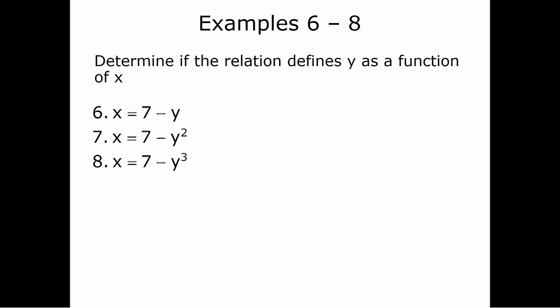For number six, x = 7 − y: y does not have an exponent, so we can solve for y. Adding y to both sides gives y + x = 7, then subtracting x gives y = 7 − x. No matter what we put in for x, we only get one y. So this is a function.